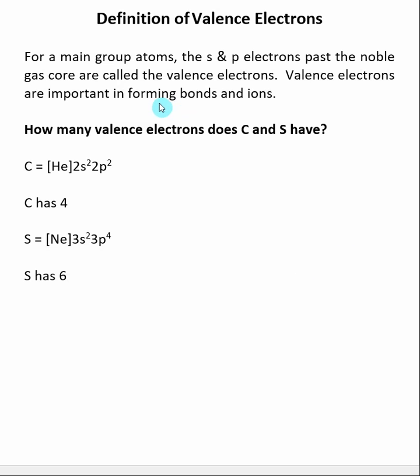In order to do this we first need to define what is meant by a valence electron. Typically when we talk about valence electrons we are looking at main group elements, not considering transition metals. We're counting the number of S and P electrons past the noble gas core of our electron configuration.